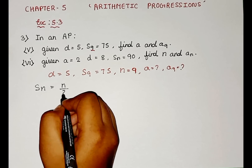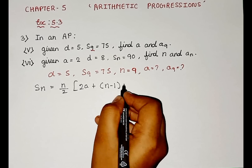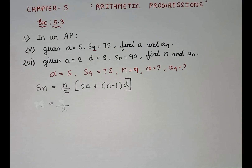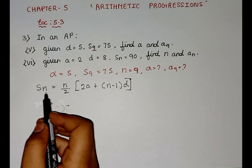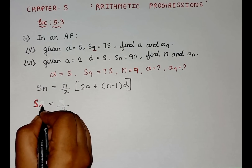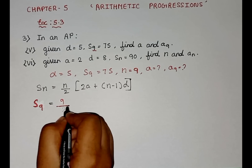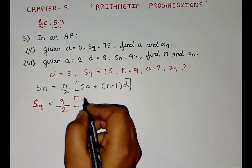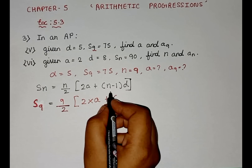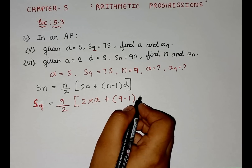SN is equal to N by 2 bracket 2A plus N minus 1 into D. Now we can substitute the values. Here SN, we know the N value is 9. So it is 9 divided by 2, bracket 2 into A — we do not know — plus N minus 1, that is 9 minus 1, into D value, which is 5.